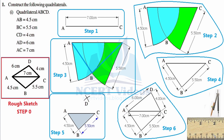The key learning from this construction: if we are given the measurements of four sides and one diagonal, we can construct a unique quadrilateral. The only tricky part is identifying what information is given using the cyclicity of the figure's naming, and constructing a rough sketch before diving into the real construction. With this, we have successfully constructed quadrilateral ABCD, completing the first part of Question 1.